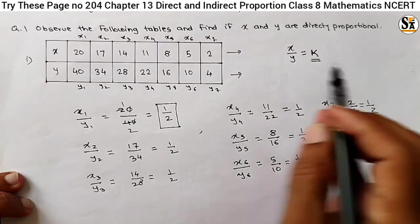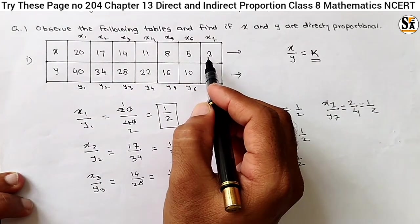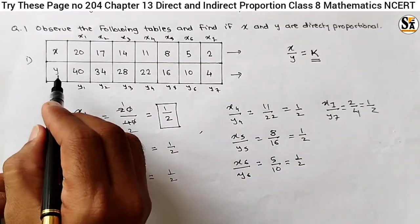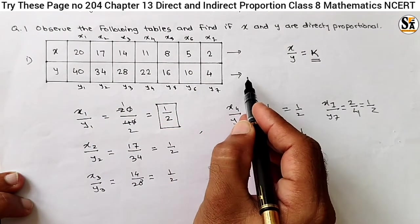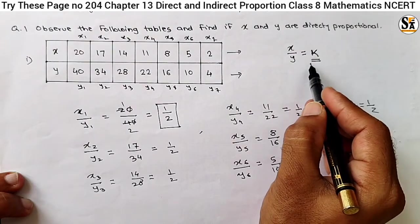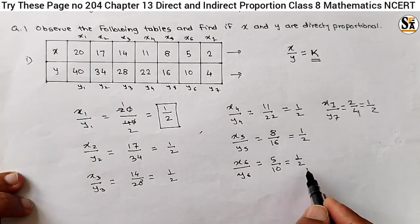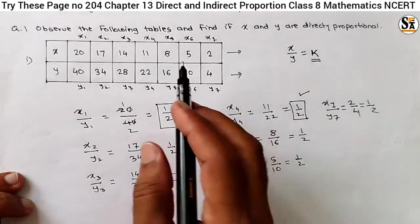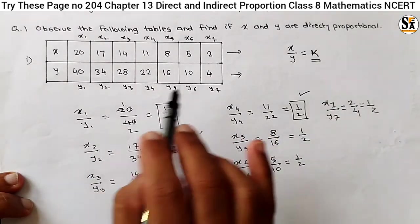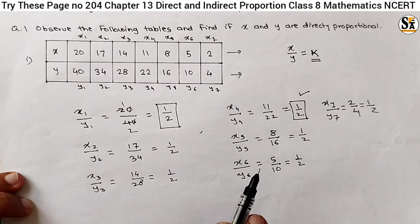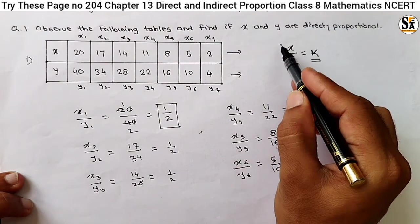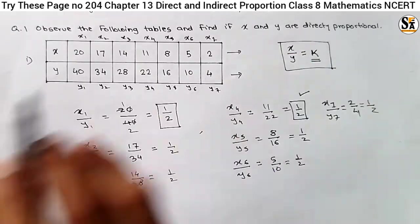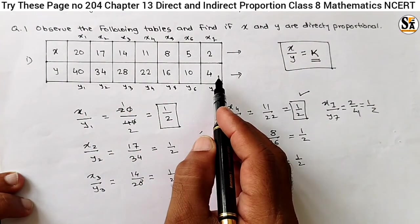Here, for all values of x at different stages, the corresponding values of y also decrease, but in the same manner. The ratio is always constant — it is 1 by 2. The ratio is constant for all values of x and y at different stages. We are satisfying the condition. So x and y are directly proportional for the first table. Now see the second table.